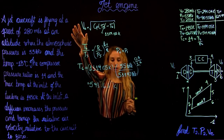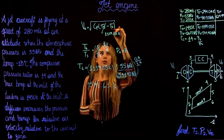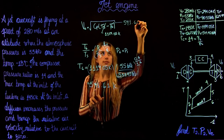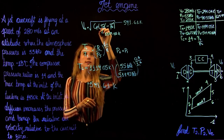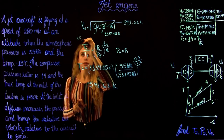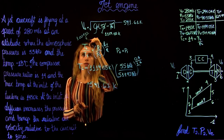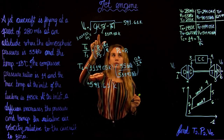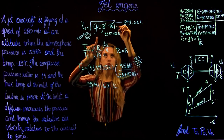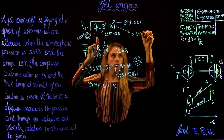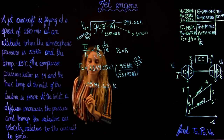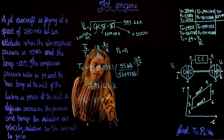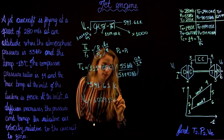Now we can go back to our equation for the exit velocity. With T6 = 591.61 K, T5 = 1119.05 K, and Cp = 1.004 kJ/kg·K, we calculate V6 = √(2 × 1.004 × (1119.05 − 591.61) × 1000), finding an exit velocity of 1029.13 meters per second.